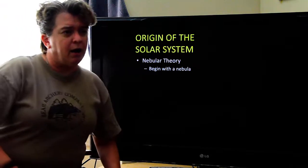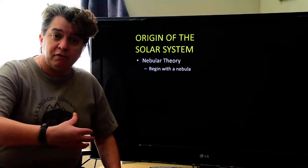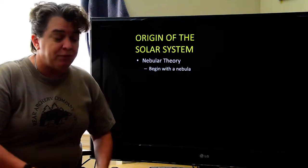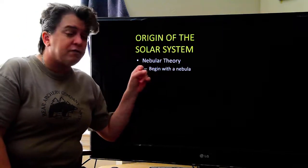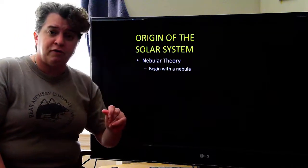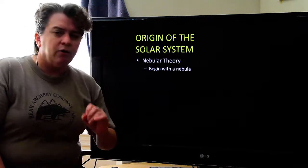All right. So, now we have a universe. Now we need a solar system for our planet to exist in. And the way our solar system began is explained in what's known as the nebular theory. And in this, we start with a nebula.